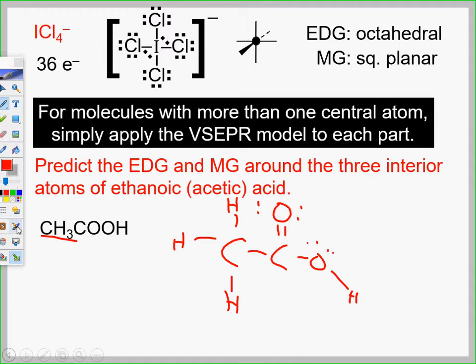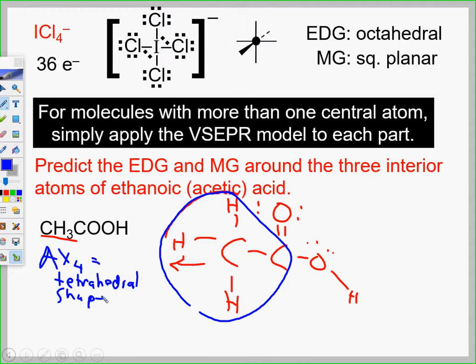So the first thing we want to do is take this, and we look at this one right here. If this was just by itself, what would it be? It would be AX4, which is tetrahedral. The shape is tetrahedral. My angle is 109.5, and my hybridization is what? SP3.